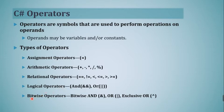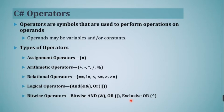The next type of operator is the bitwise operator. Bitwise operators work on bits and are useful to perform bit-by-bit operations such as bitwise AND, bitwise OR, and bitwise exclusive OR on operands. We can perform bit-level operations on boolean and integer values.